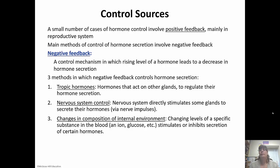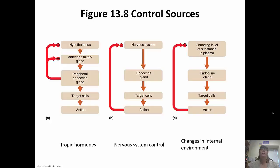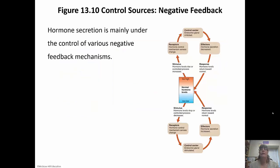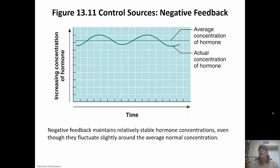The nervous system can directly stimulate some glands to secrete their hormones through nerve impulses. Receptors can also detect changes in the blood — like glucose concentration — and then stimulate or inhibit certain hormone secretions. The three mechanisms are: tropic hormones with the hypothalamus regulating the anterior pituitary, nervous system control directly stimulating endocrine glands, and changes in the internal environment. Hormone concentration is essentially leveled out by negative feedback — a little high sometimes, a little low sometimes, but on average it's pretty stable.